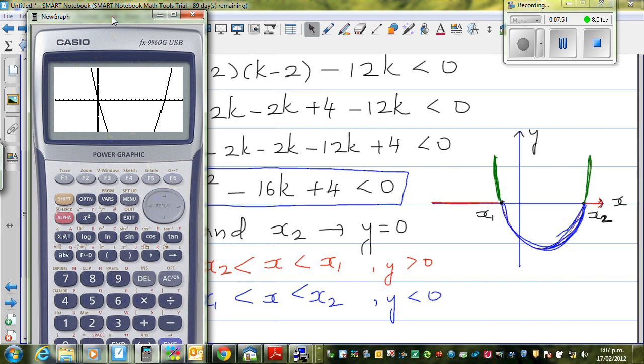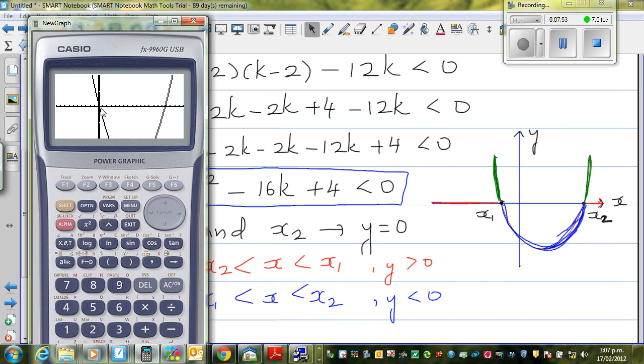We are interested in this point and this point, or any value of x which is between these two will satisfy the equation. I'll go G-Solve, this is called root. One value is x1, in this case is 0.254. And the next value would be 15.746.